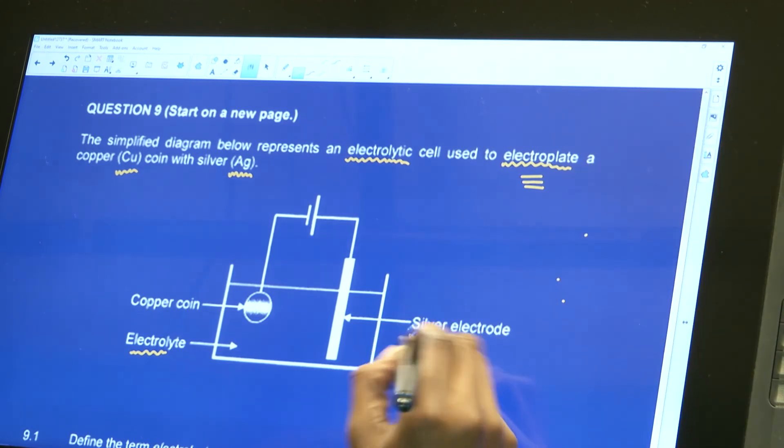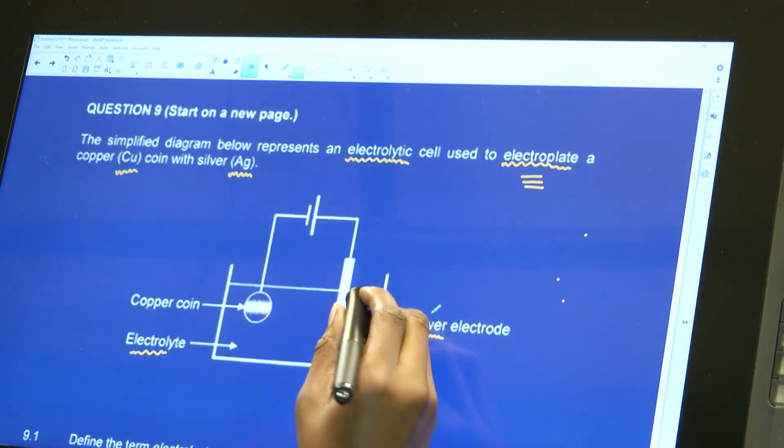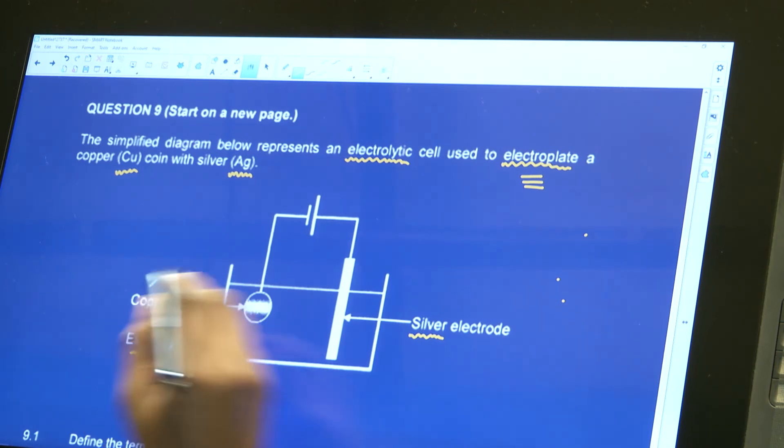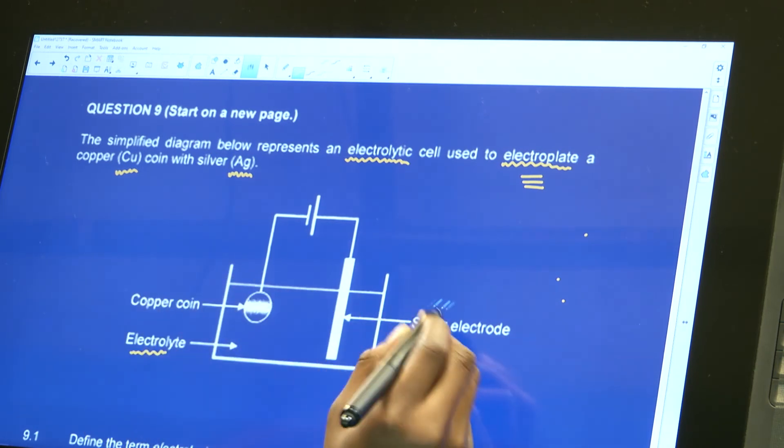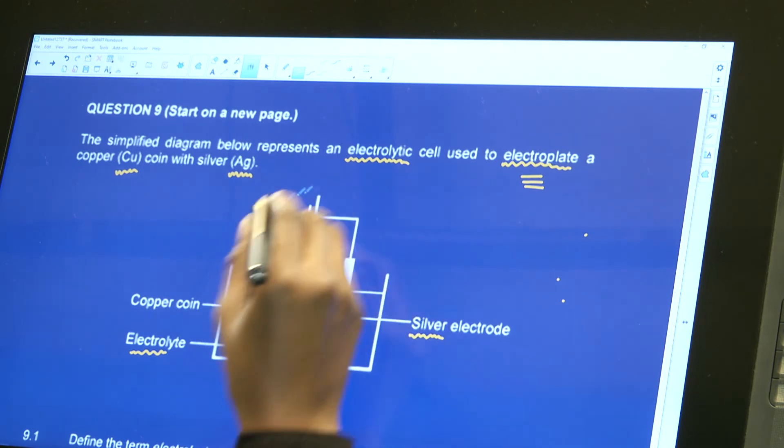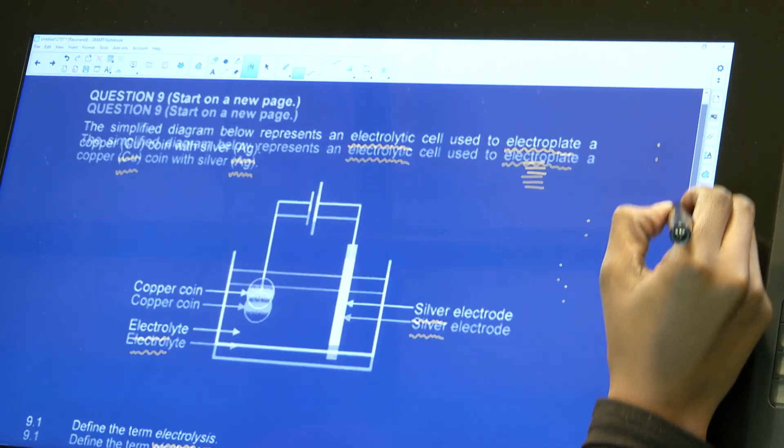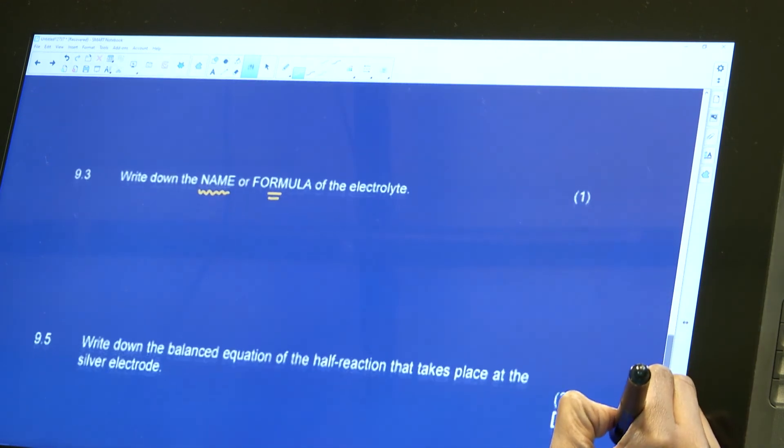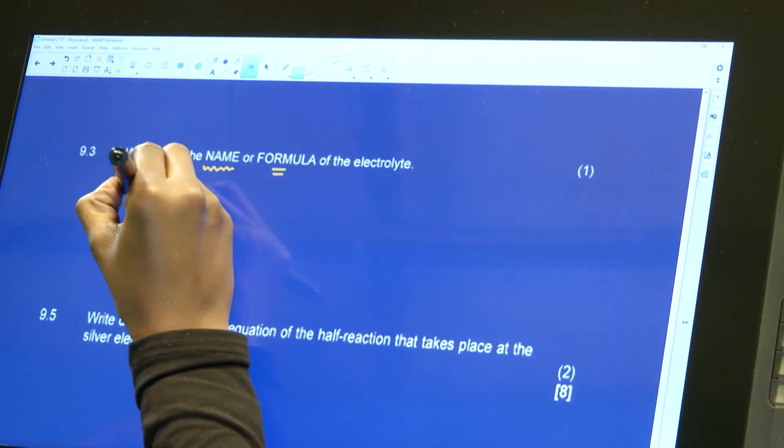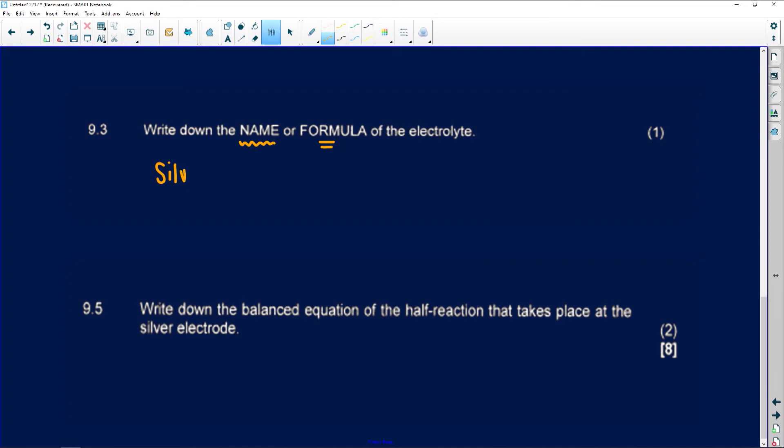Electrolyte is the solution we have in the beaker, so that will be silver nitrate because I do have silver here. What happens? The silver needs to coat the copper coin, so it means the silver will lose silver ions in solution, and then they will coat the coin. So my electrolyte will be silver nitrate.